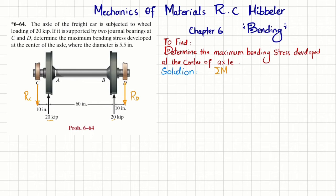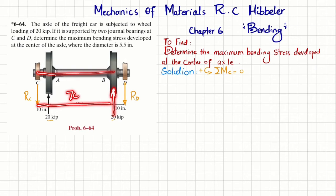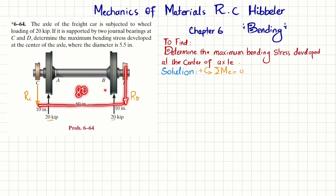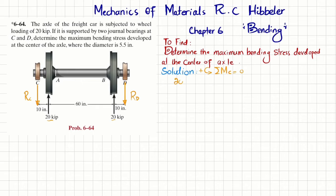The first equation of equilibrium: sum of all moments about point C equals zero, taking counterclockwise as positive. The first moment is 20 kips times perpendicular distance 10 inches, counterclockwise, positive. The second moment is 20 kips times perpendicular distance 70 inches, also counterclockwise, positive. The third moment is RD times 80 inches, clockwise, negative. So: 20×10 + 20×70 − RD×80 = 0.